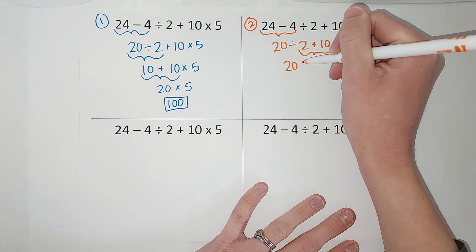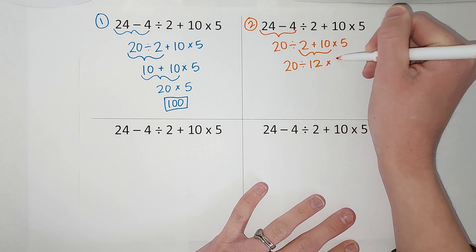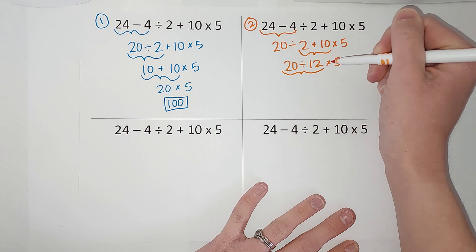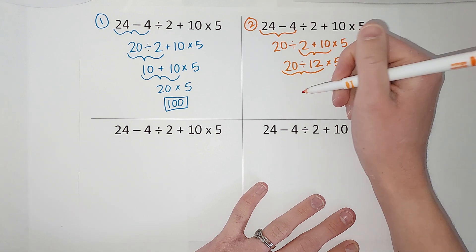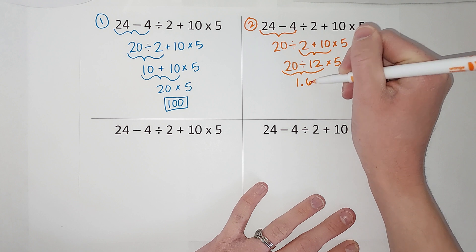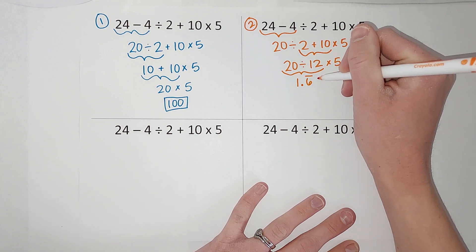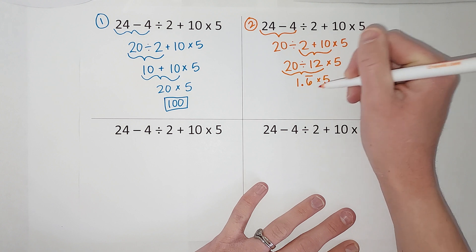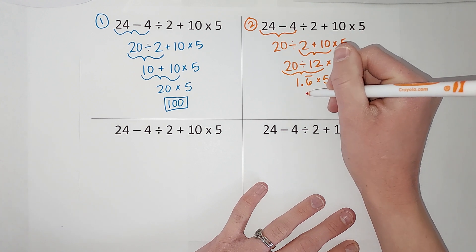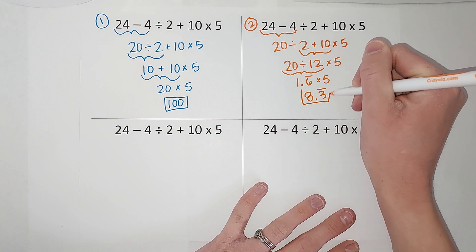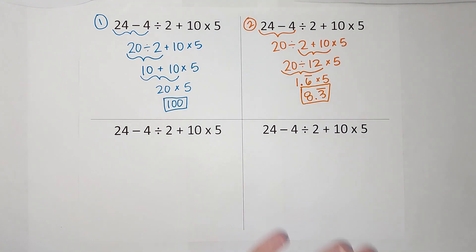Then he says, I didn't want to divide yet, so I added, getting 20 divided by 12 times 5. Then I decided I should probably divide, so I stuck that in my calculator and got 1.6 repeating times 5. Then I multiplied those and got 8.3 repeating.